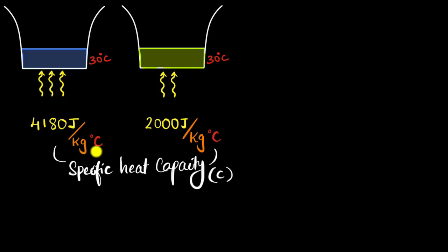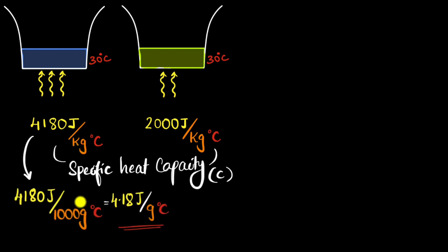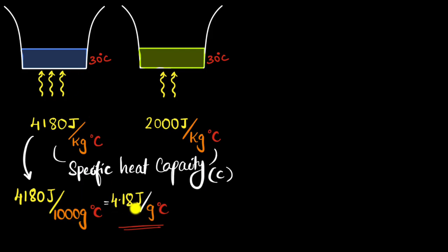You can also write this in slightly different units. A kilogram is 1,000 grams, so if I convert to grams, I get 4,180 joules divided by 1,000 grams per degree Celsius, which turns out to be 4.18 joules per gram per degree Celsius. This number says: if you take one gram of water to raise its temperature by one degree Celsius, you would require 4.18 joules of energy. This is an important number we can use to predict a lot of things.